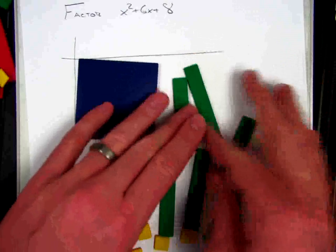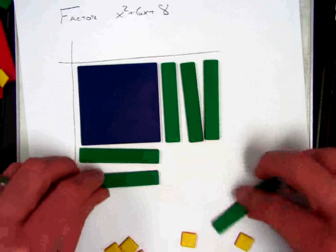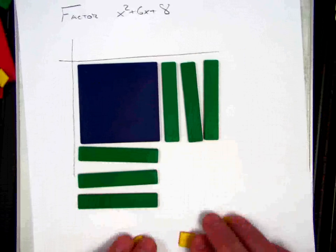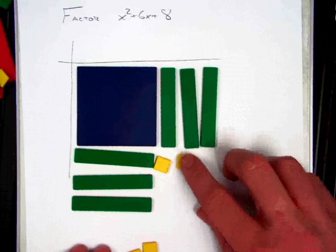And then some of these x values would go on the bottom and on the side, and then my units would go over here. So let's try this combination to factor.